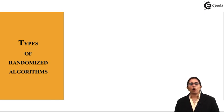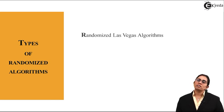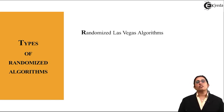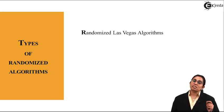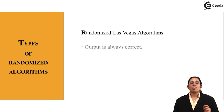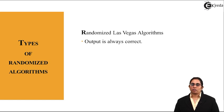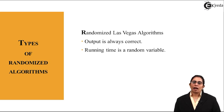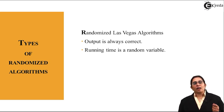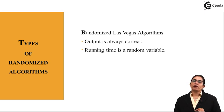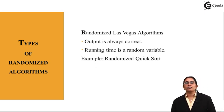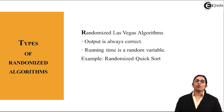The first one is a Las Vegas algorithm. It has a significance that its output is always correct and running time is a random variable. When my running time is a random variable for the Las Vegas algorithm, the output is always correct and an example of it is randomized quick sort.